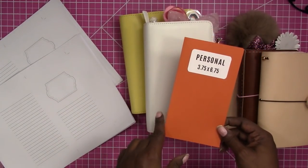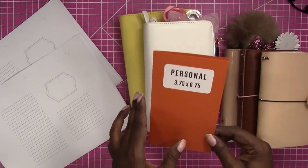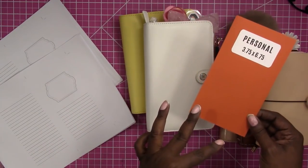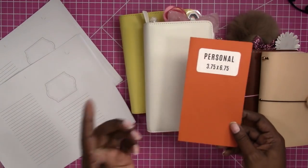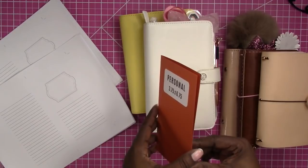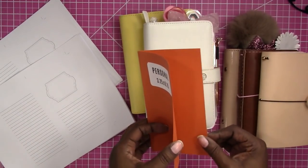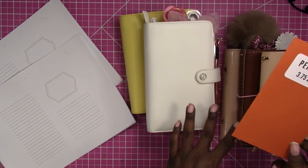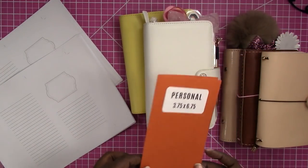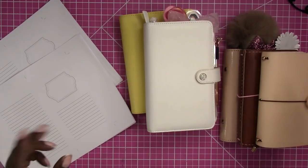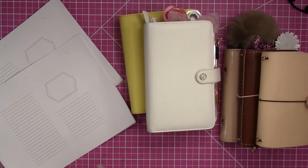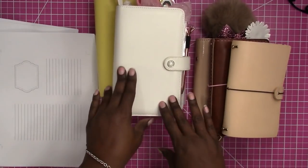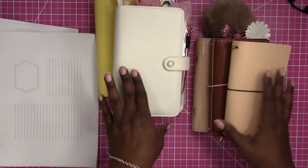Personal size is one of two that can work in multiple binding systems. The other one is A5 and I've already done a video on that which I will link here. A5 inserts work for traveler's notebook, for binders, and they also can work for disc systems. So I'm going to show you a few different styles of binders and traveler's notebooks.